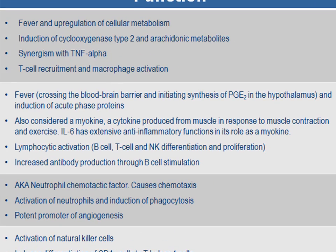Interleukin-6 also induces acute phase proteins via the liver. Interleukin-6 is also considered to be a myokine — a cytokine produced from muscle in response to muscle contraction and exercise. It has been shown that interleukin-6 has extensive anti-inflammatory functions in its role as a myokine. This interleukin also activates lymphocytes — B-cells, T-cells, and natural killer cells — causing their differentiation and proliferation.